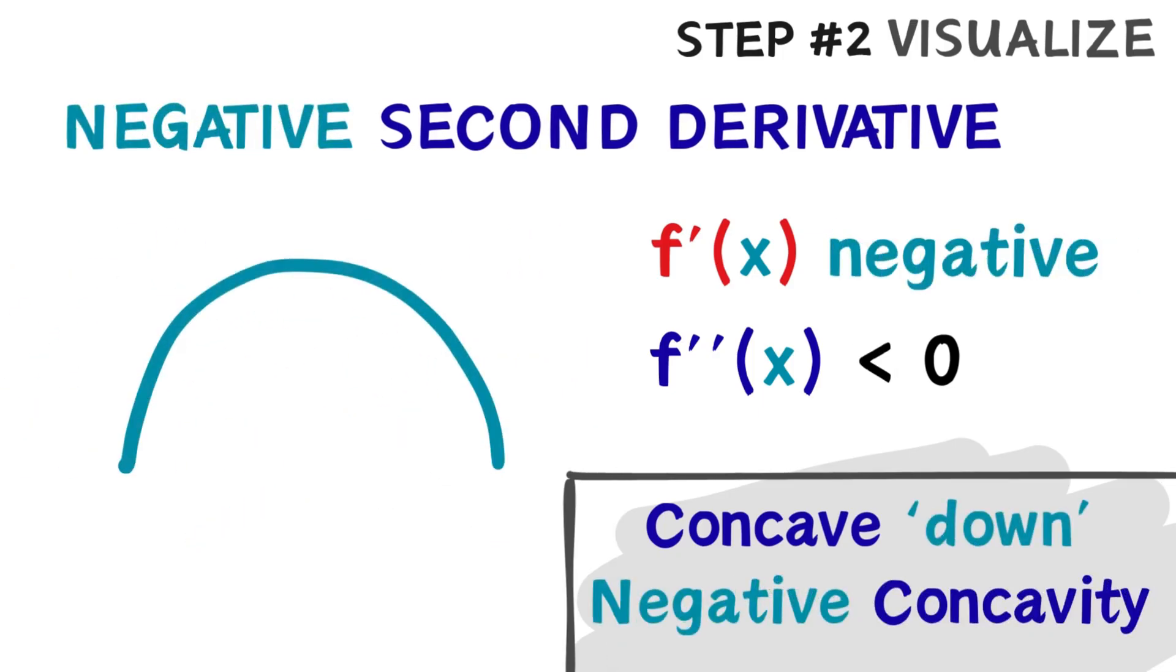On the other hand, if the second derivative is negative, the graph bends downward. As you might have guessed, we say that this function is concave down, or that it has a negative concavity. And this shows us that the slope is actively decreasing.